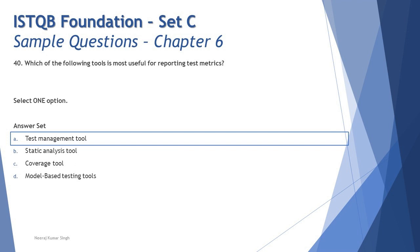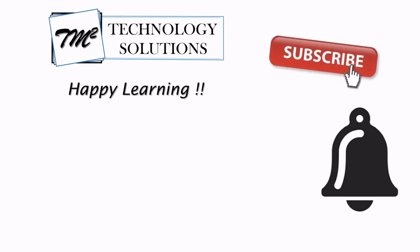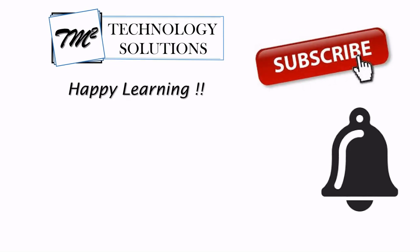So the right answer is A — the test management tool — which helps capture all information about the overall testing lifecycle and provides all the necessary reports. Whether you're talking about ALM, X-Ray, or Jira, they all give you all the metrics. That's all for this tutorial. Feel free to comment below with any queries. Keep learning, keep exploring, keep understanding the context. Thanks for watching and happy learning!